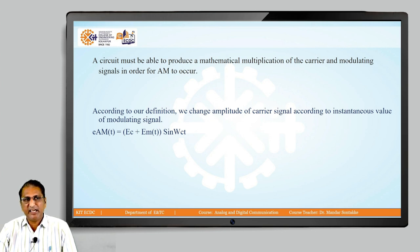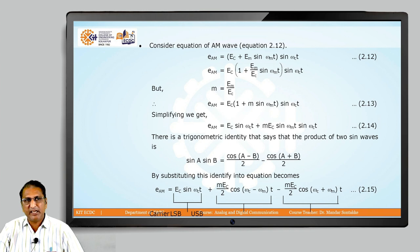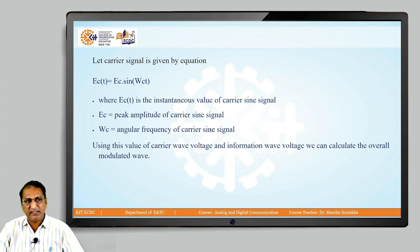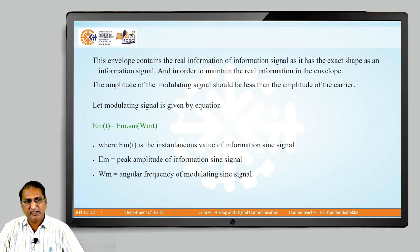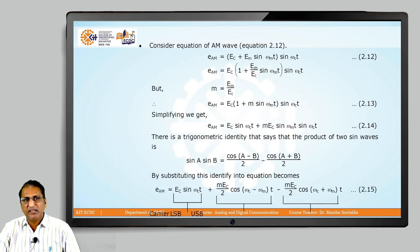So our equation becomes: E_AM(t) = [E_c + E_m(t)] · sin(ω_c · t). Now substituting E_m(t) = E_m · sin(ω_m · t) into the equation, we get: E_AM = [E_c + E_m · sin(ω_m · t)] · sin(ω_c · t).